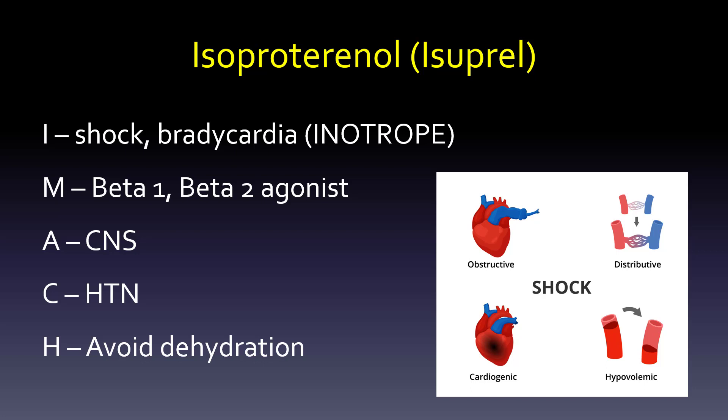The mechanism of action affects beta-1 and beta-2 — heart and lungs. For adverse effects, especially with beta-1, think about the CNS: it makes you jittery and increases heart rate. So a consideration or contraindication: if somebody has hypertension and we're trying to lower their heart rate and blood pressure, this is probably not the best medication. In terms of how we can help the patient, we need to have adequate volume to make this work, so we definitely want to avoid dehydration.